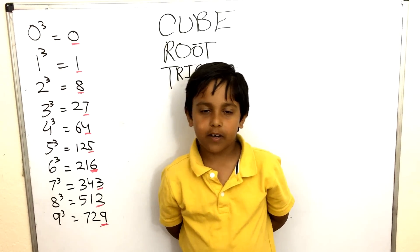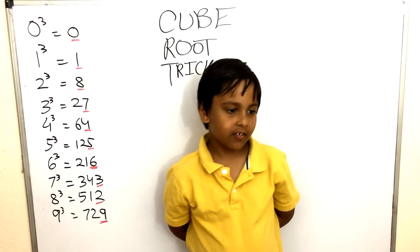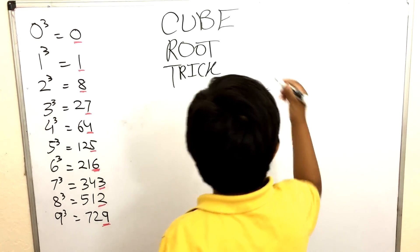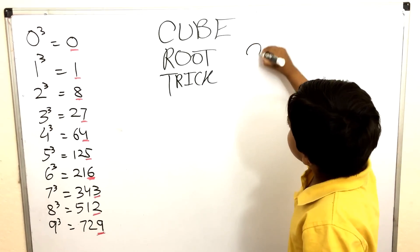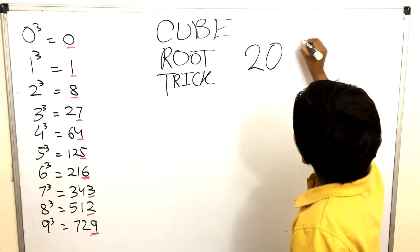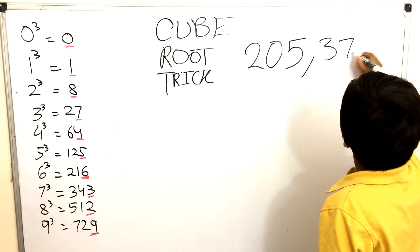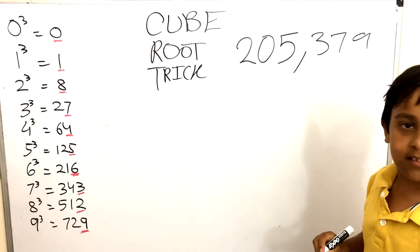Okay, so what is the cube? 205,379. Wait, so it's 205,379? Did I get it correct, the cube? Yes. Okay.